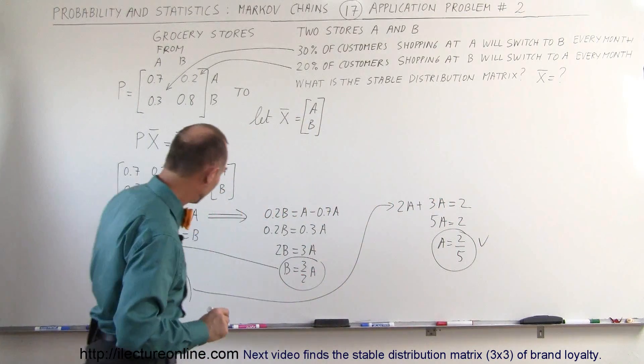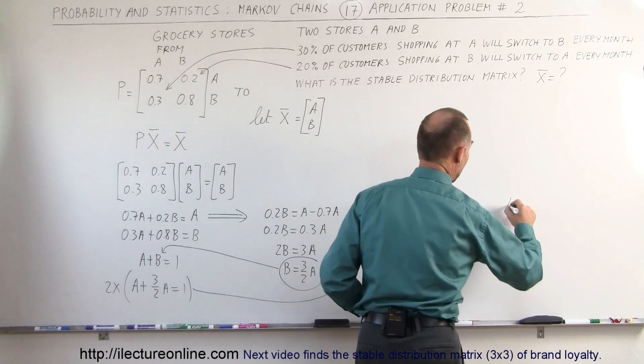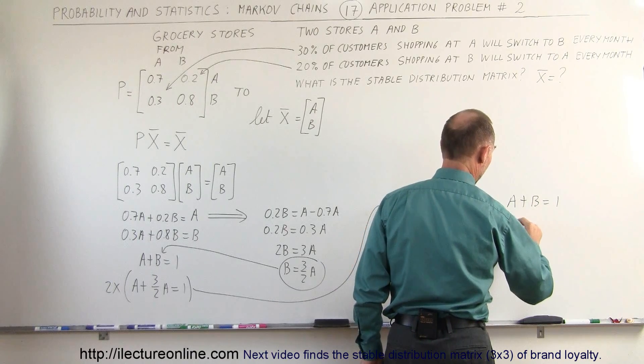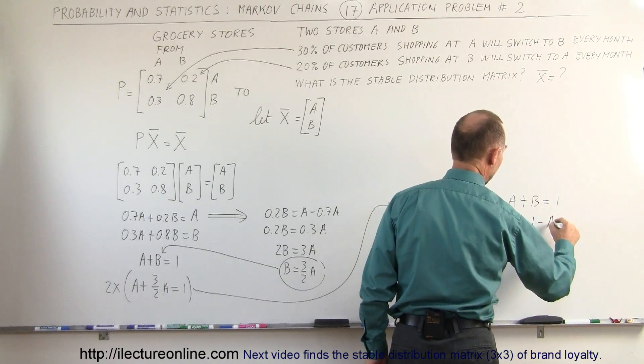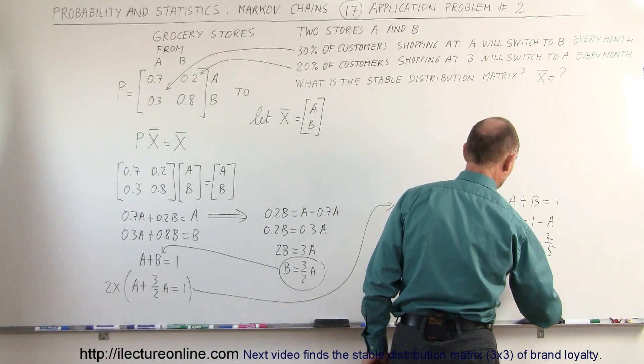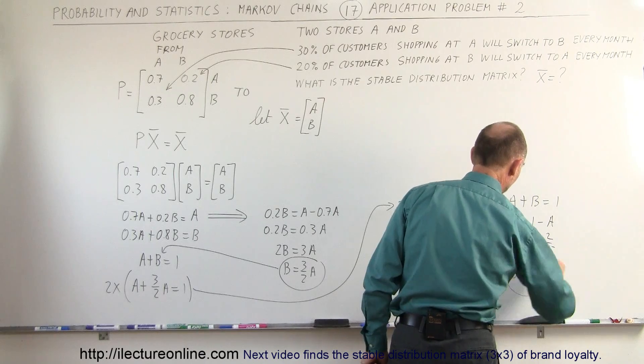Since A plus B equals 1, A plus B equals 1. And so since A is 2 fifths, B is equal to 1 minus A, so B is equal to 1 minus 2 fifths.